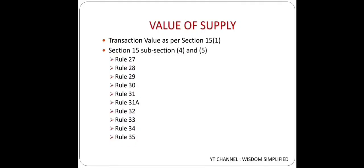We are reading rules to find out the Value of Supply. But when is a rule applicable? When Section 15 Sub-section 1 is not applicable. First we have to look at Section 15 Sub-section 1. If that is not applicable, then we go to the rules for Value of Supply - Rules 27 to 31A are complete.